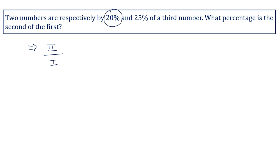The two values given are 20% and 25%, that is x% is equal to 20%, y% is equal to 25%. Here x% is the first number, y% is the second number, and these two numbers are of the third number.